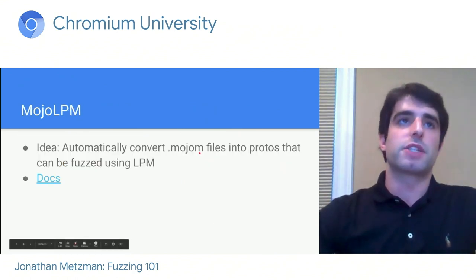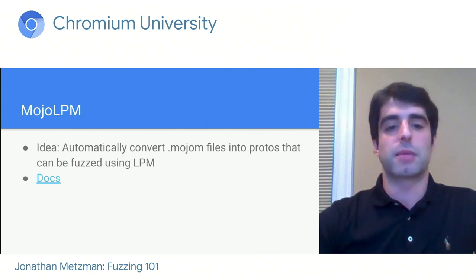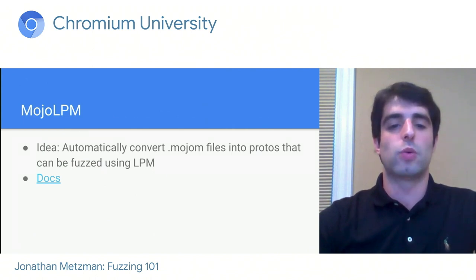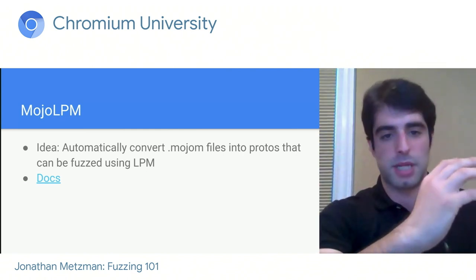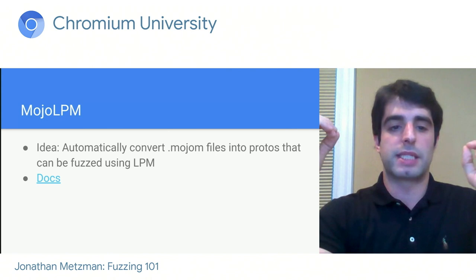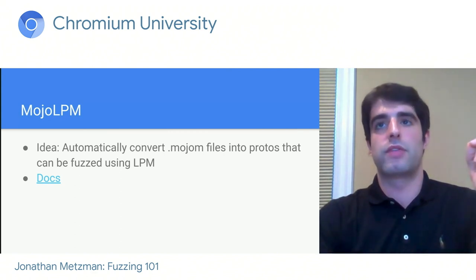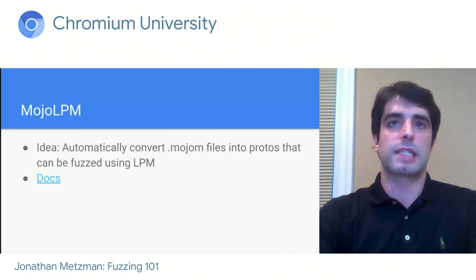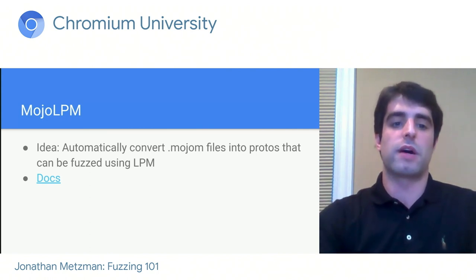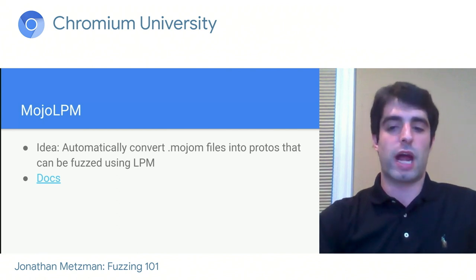Another option is Mojo LPM. Mojo is Chromium's framework for IPC, or interprocess communication. Because Chromium's security model relies on processes, Mojo LPM is a good tool for fuzzing code that could potentially be exploited across sandbox boundaries. The idea is that Mojo files — which describe the API one process offers to another — are automatically converted into proto files so that LPM can create test cases based on those Mojo files. Unlike with most LPM fuzzers, here you won't spend as much time writing a schema; instead, the time will mostly be spent on the harness.